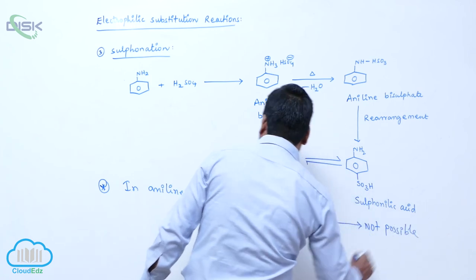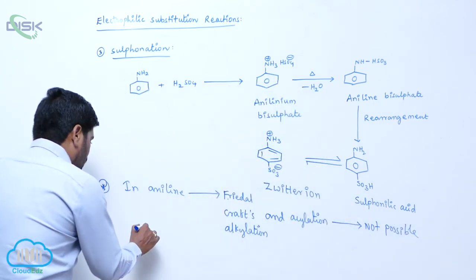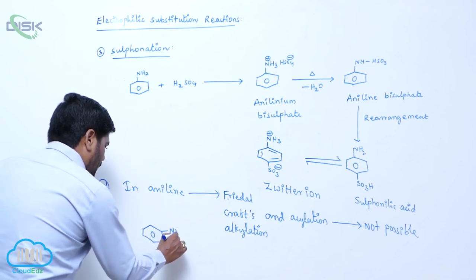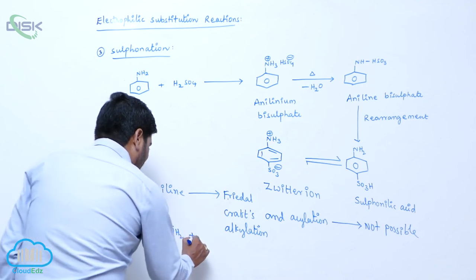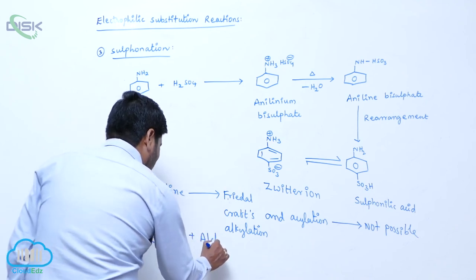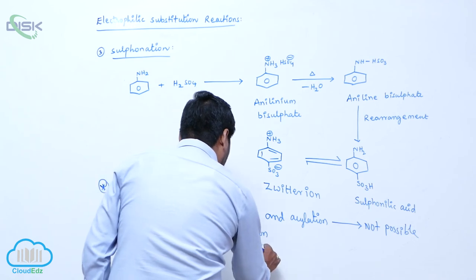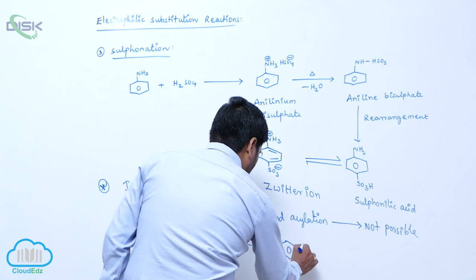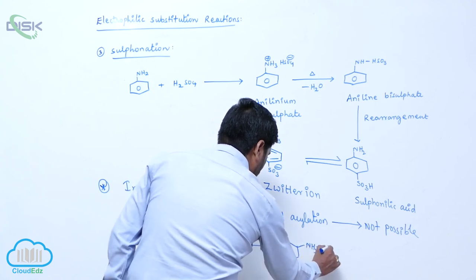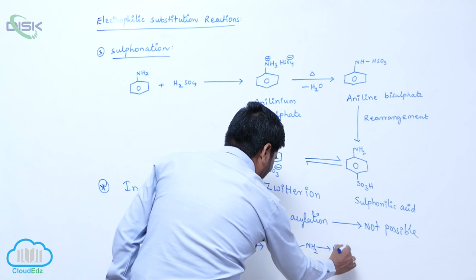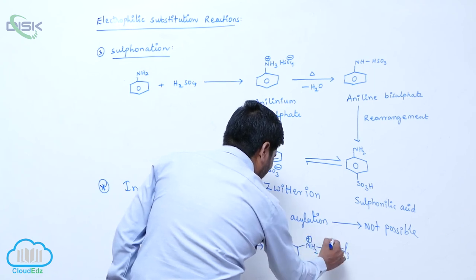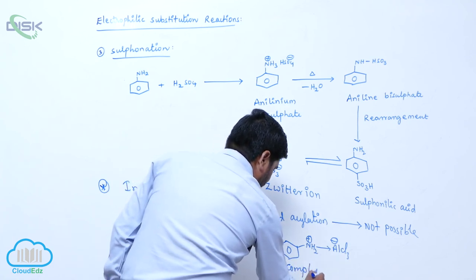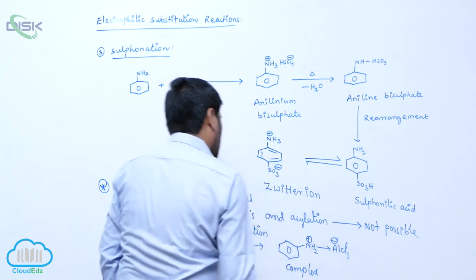The reason is aniline nitrogen lone pair directly combines with a Lewis acid like AlCl3 to form a complex. To form which one? A complex NH2. Then here is AlCl3. Here positive 2 charge. Here is negative charge. This type of complex is formed instead of compound. A complex is formed. So,